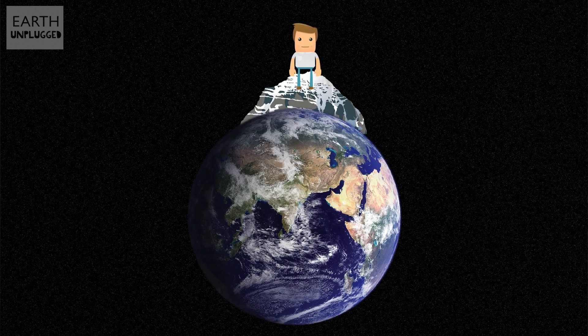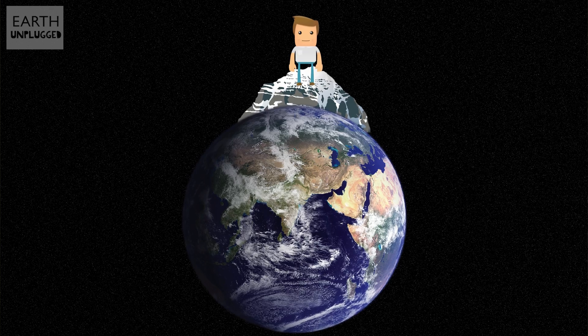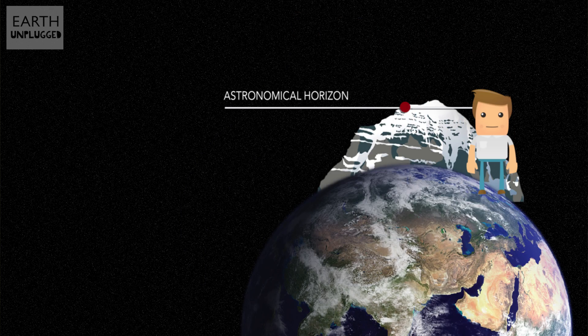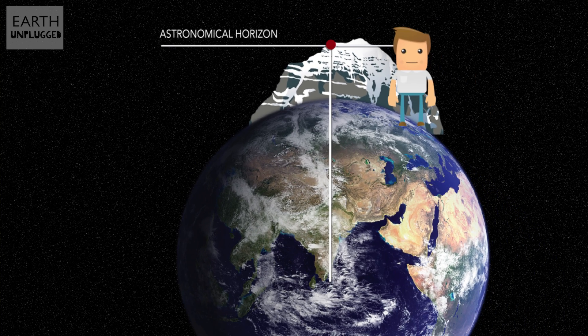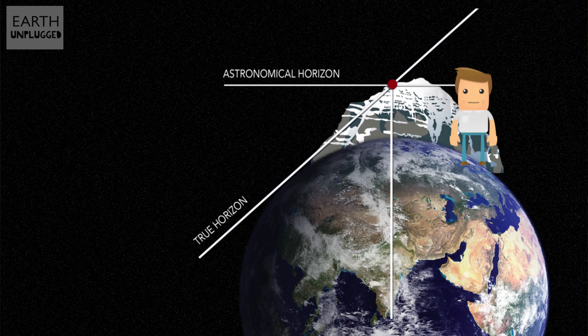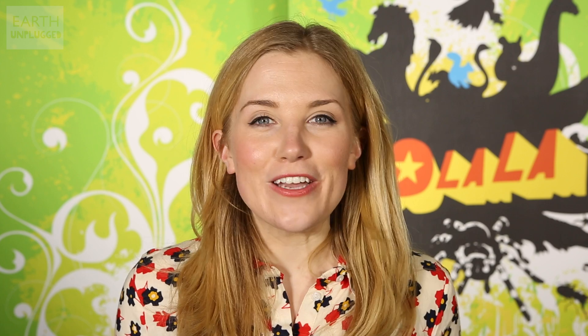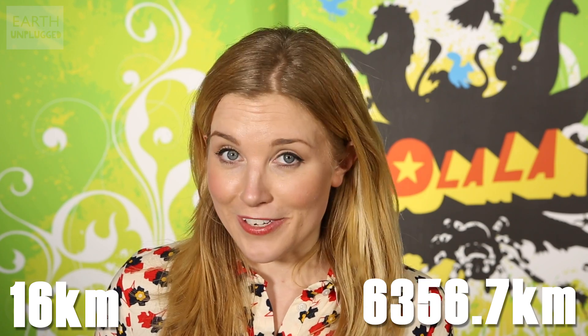Sat on the top of a mountain, he measured the angle between the astronomical horizon, which is perpendicular to straight down, and the true horizon, where the land stops. Knowing only the height of the mountain and a handful of angles, he was able to work out the radius of the Earth using trigonometry. And incredibly, a thousand years on, he was only 16 kilometers out of its current average of 6,356.7 kilometers.